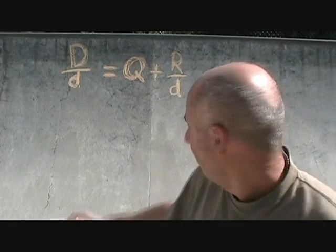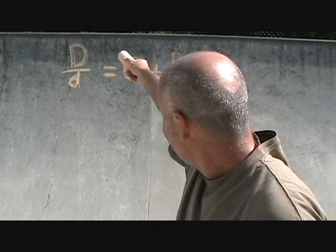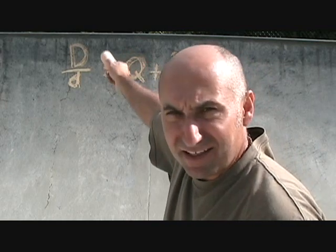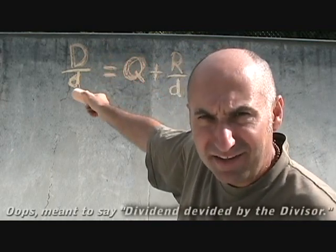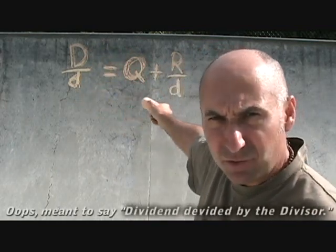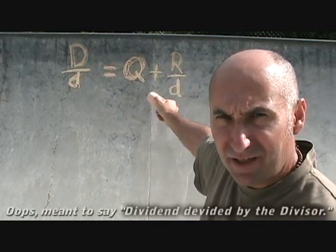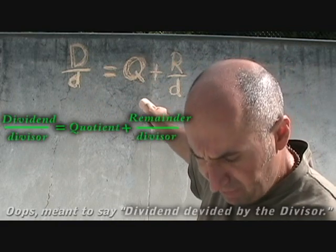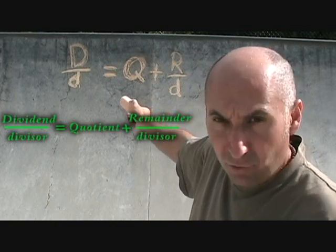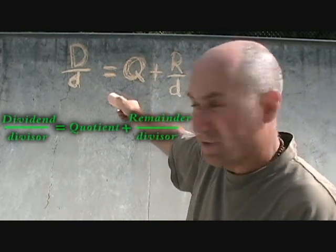What we had was the divisor divided by the dividend is equal to the quotient plus the remainder divided by the divisor, or the denominator.